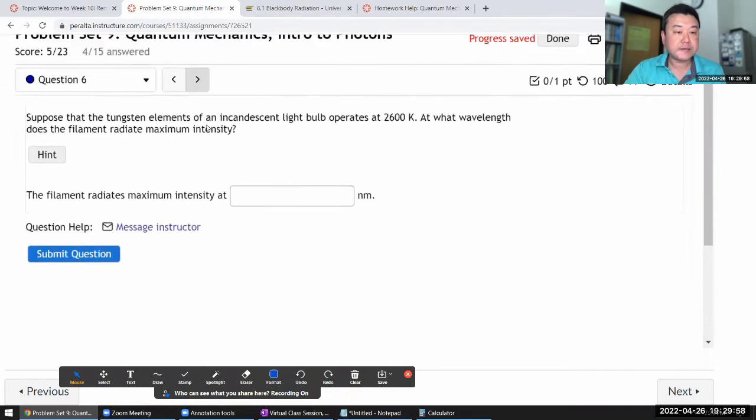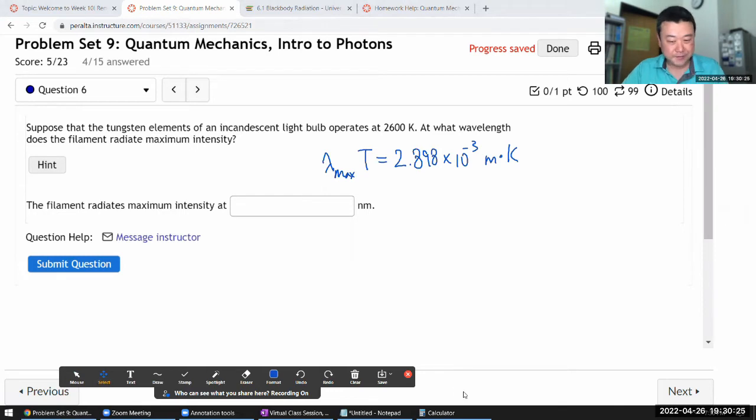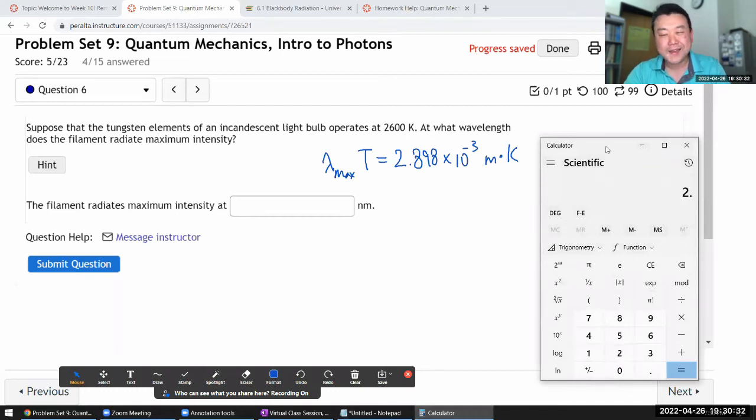Question 6 says suppose that the tungsten element of an incandescent light bulb operates at this temperature—what wavelength? So we are given temperature and asked for the wavelength, so I'm going to do the same thing. Take the constant 2.898 times 10 to the power of minus 3, divided by the given temperature 2600 Kelvin. That's the number in meters; let me multiply it by 10 to the power of 9 to get the answer in nanometers. So the peak wavelength happens at 1115 nanometers.